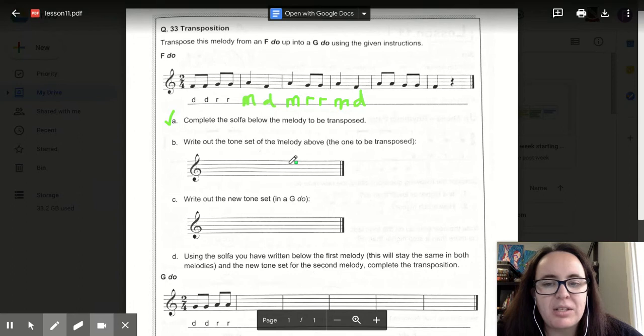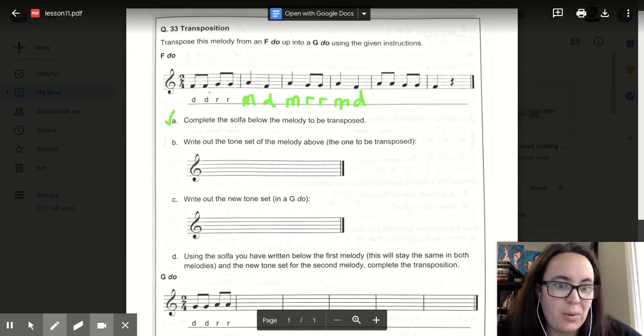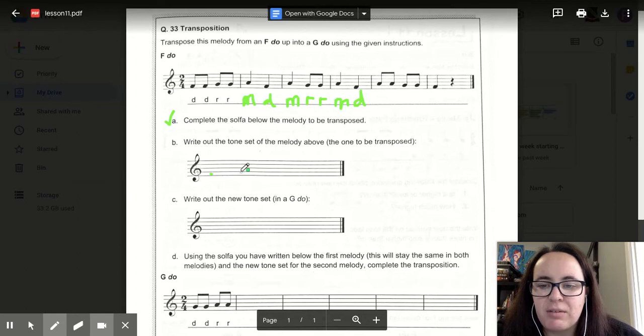B, we need to write out our tone set of this. If we know that it's in F DO, we think back to last lesson, lesson nine, all about tone sets. We know that DO is our F, which is living in space one of our stave. RE is our G, which is living on line two. And ME is our A, which is on space number three.